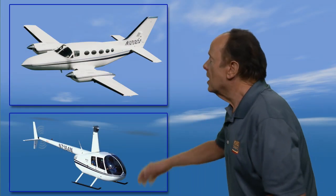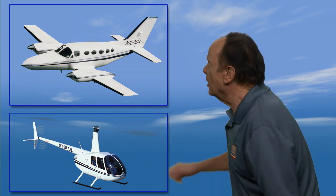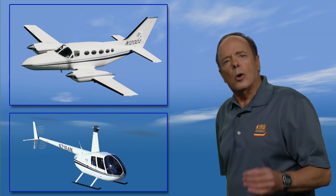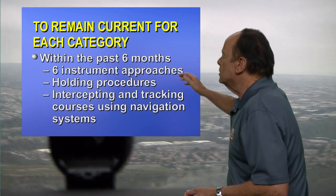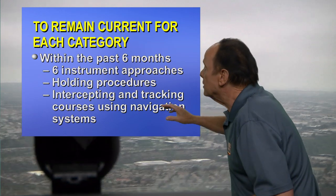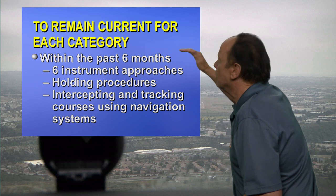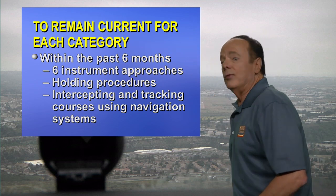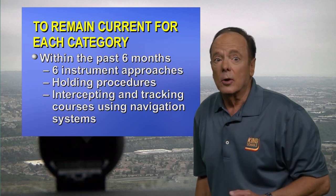Recency is for each category of aircraft. For instance, airplanes and rotorcraft are two separate categories, and you have to be current in each category. In order to remain current for each category of aircraft, the pilot in command must have flown six instrument approaches, as well as having conducted holding procedures, and intercepting and tracking courses using navigational systems. All of that has to be done within the last six months, in each category of aircraft that you want to maintain instrument currency for.